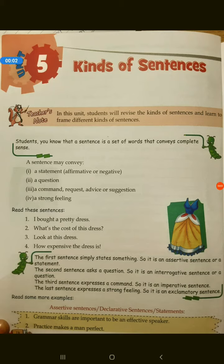Good morning children, today we will be doing Unit number 15 - kinds of sentences from your grammar book. We have already done this in our last class, that is your fourth class. Today we will be doing a revision and then we will see some exercises related to the explanation. Let's start.